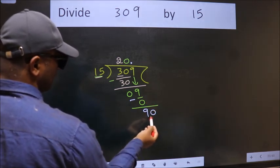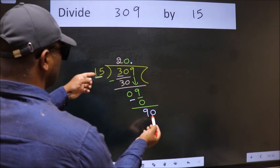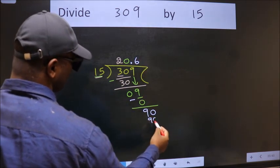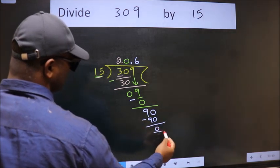So 90. When do we get 90? In 15 table is 15 times 6, 90. Now we subtract. We get 0.